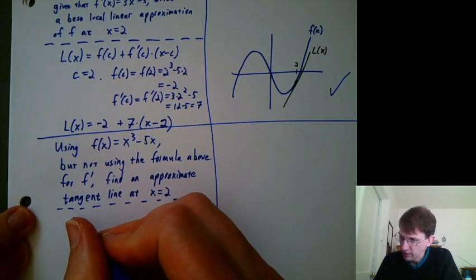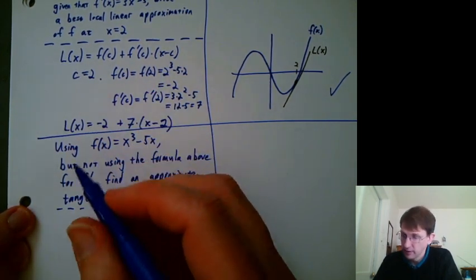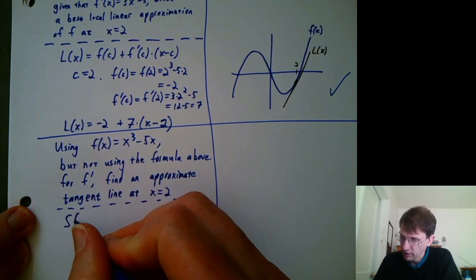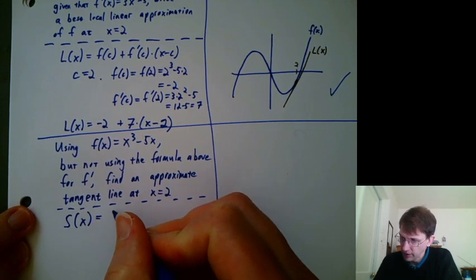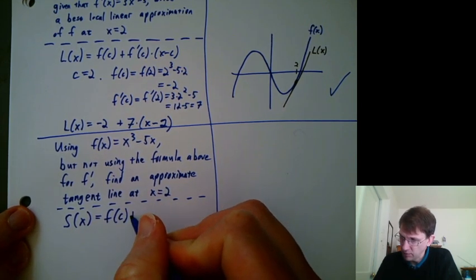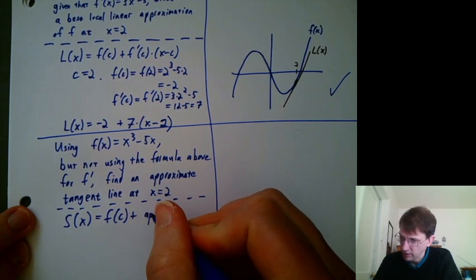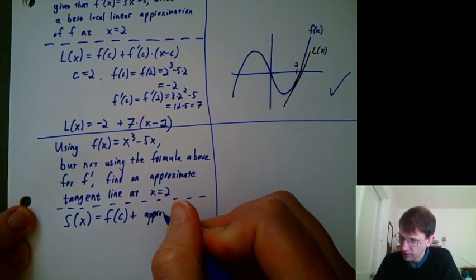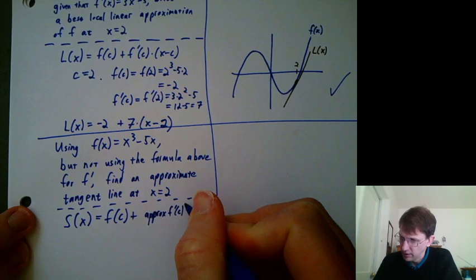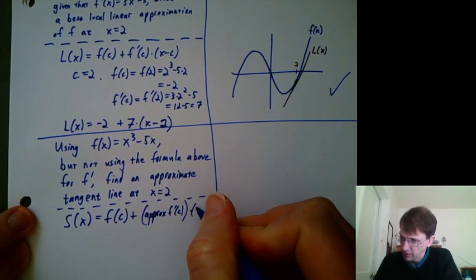So our tangent line would usually be this. I'm going to call our new function s(x). So that would be f(c) plus, we'll say, approximate f' at c times x - c.